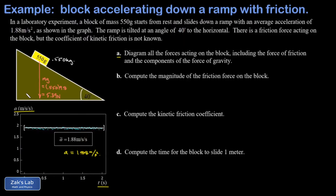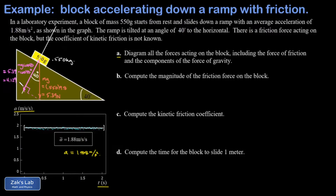I draw a perpendicular axis and one component of gravity points perpendicular to the ramp. We've learned in previous examples that this angle equals the angle of incline, which is 40 degrees. The perpendicular component is the adjacent side of a right triangle, giving mg cosine θ: 5.39 times cosine 40° = 4.129 newtons. The parallel component is mg sine θ: 5.39 times sine 40° = 3.465 newtons.